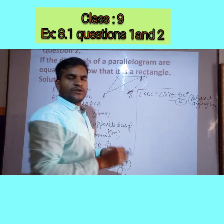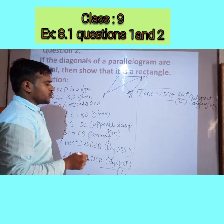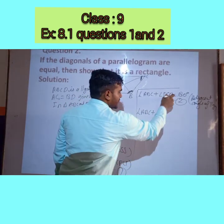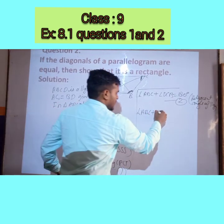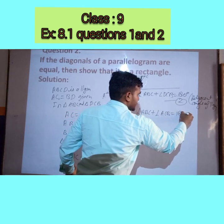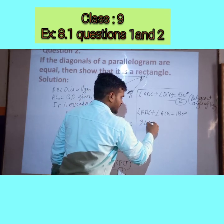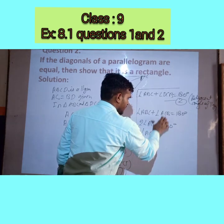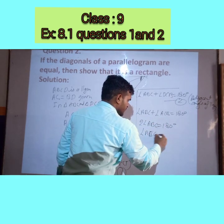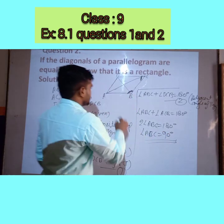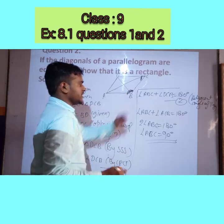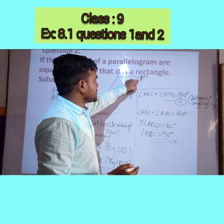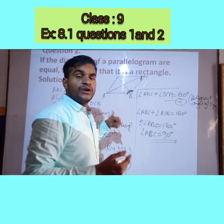From equations 1 and 2, since angle ABC = angle DCB, we can substitute: angle ABC + angle ABC = 180°, so 2 × angle ABC = 180°, which gives angle ABC = 90°. So angle B is 90 degrees.